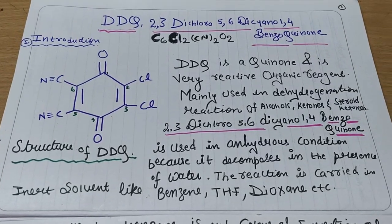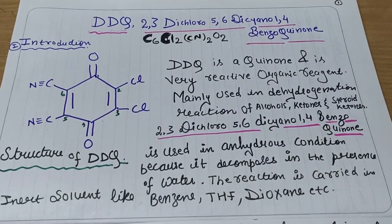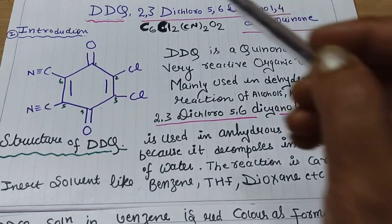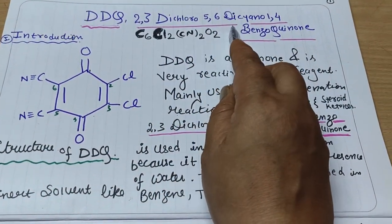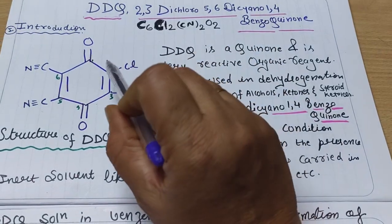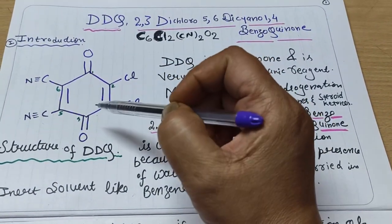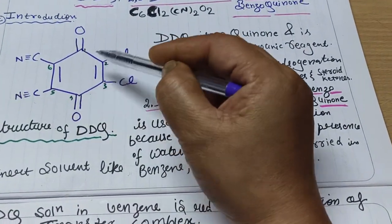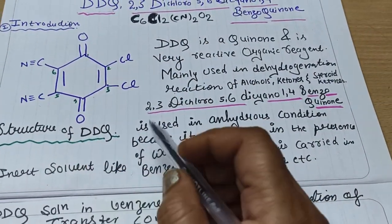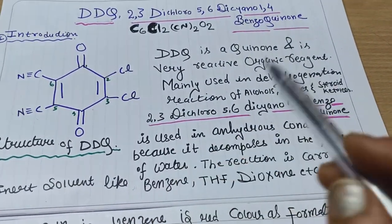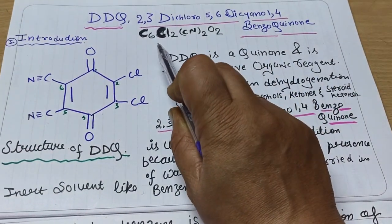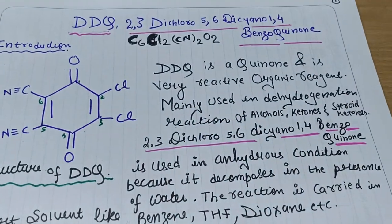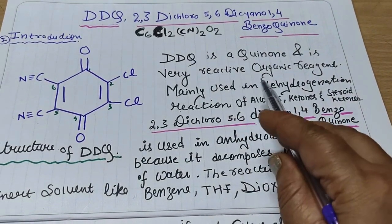Welcome to Pacific Chemistry Classes. Today's topic is DDQ, an organic reagent. The full form of DDQ is 2,3-dichloro-5,6-dicyano-1,4-benzoquinone. We can see the structure of DDQ, which is derived from quinone. Its formula is C6Cl2(CN)2O2. It is an important and very reactive organic reagent.